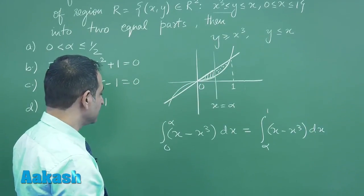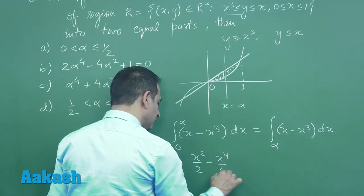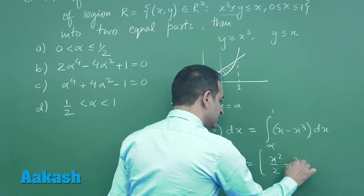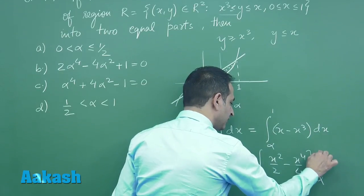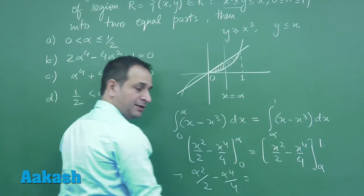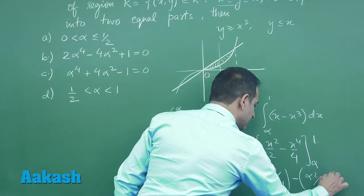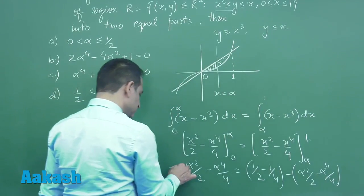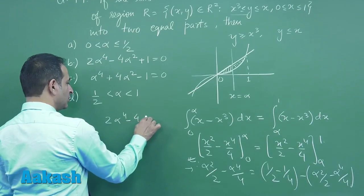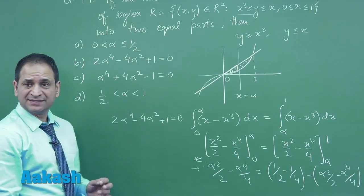Now from here we will get the equation for α. Let us see what we are getting: x²/2 - x⁴/4 applying the limits 0 to α and from here we have again x²/2 - x⁴/4 from α to 1. Now solving this equation we will get the equation as 2α⁴ - 4α² + 1 = 0.